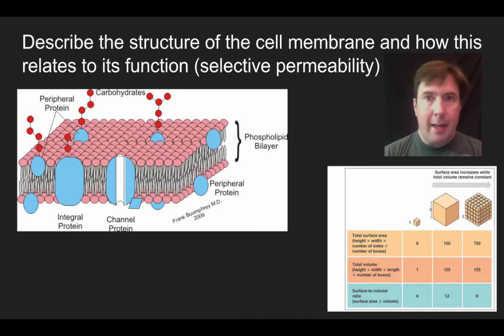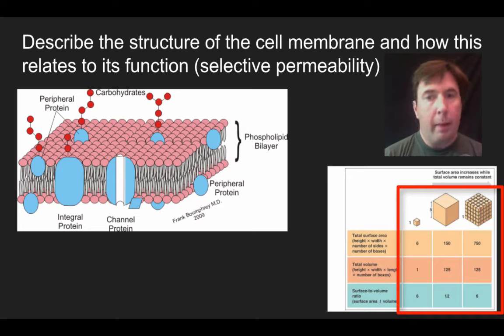So hopefully what you came up with is that cells divide. And so what we see here in this particular image is that if we have a 1 by 1 by 1 square that has a surface area of 6 and a volume of 1. And so the surface area to volume ratio is 6. But if we make a 5 by 5 by 5, the ratio gets much less advantageous and becomes a 1.2.